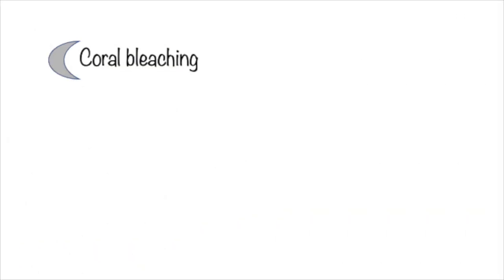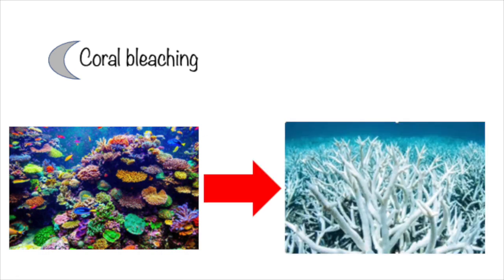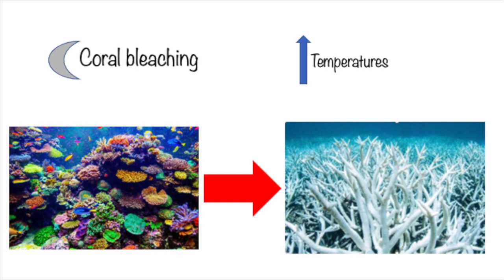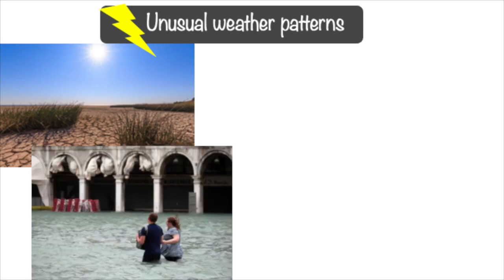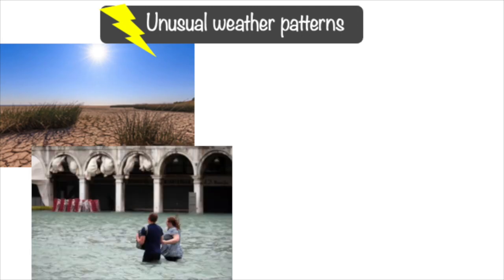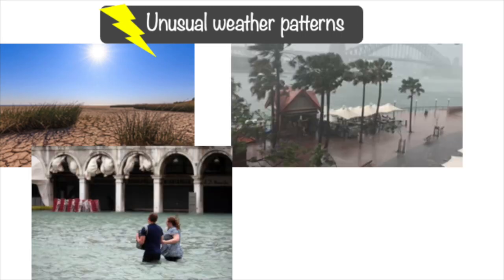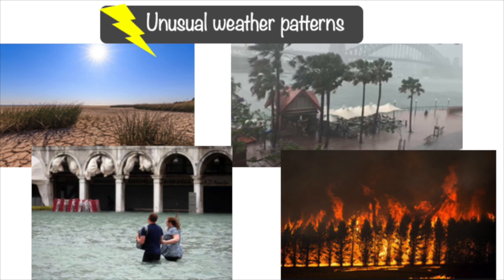Coral bleaching is when coral loses its color. It is caused by rising temperatures in the water. Unusual weather events include drought, floods, wild storms, and catastrophic bushfires.